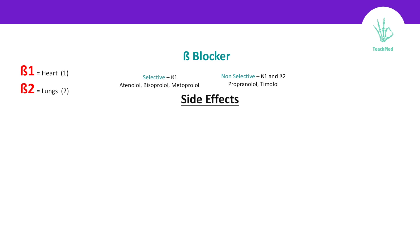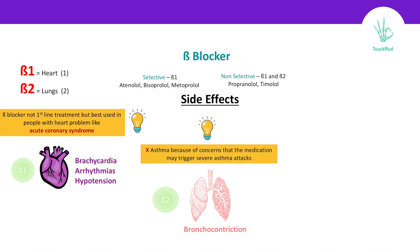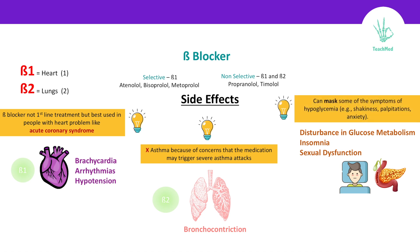However, this comes with side effects. In the heart, blocking beta-1 can cause bradycardia, arrhythmias, and hypotension. That is why we don't use it as a first-line treatment, but in people with heart problems like acute coronary syndrome. If you use non-selective beta blockers, they also work on beta-2 receptors found in the lungs, so they can cause bronchoconstriction. An important clinical point: never use a non-selective beta blocker in someone with asthma, because you will trigger severe asthmatic attacks. They also disturb glucose metabolism, cause insomnia, and sexual dysfunction. Because of these side effects, beta blockers can mask some symptoms of hypoglycemia, like shakiness, palpitations, and anxiety. Lastly, they can cause weight gain.